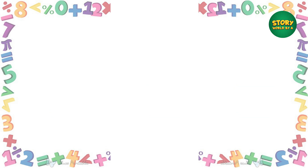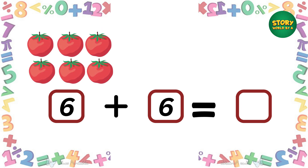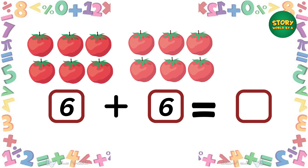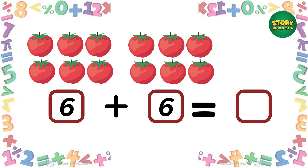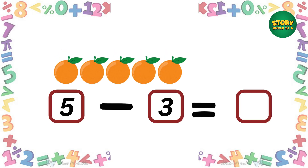Let's try one last addition. We have six tomatoes — if we add six more tomatoes, how many do we have? Great, we have twelve tomatoes! Now let's subtract.